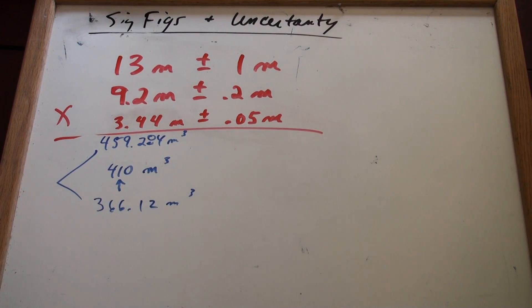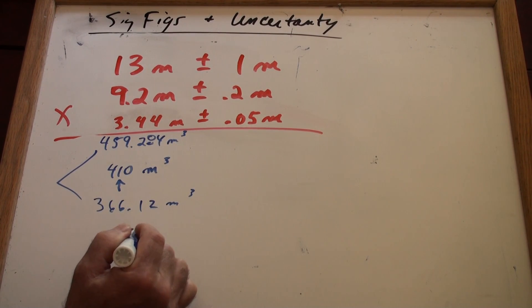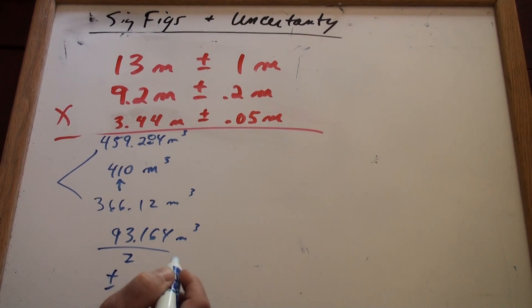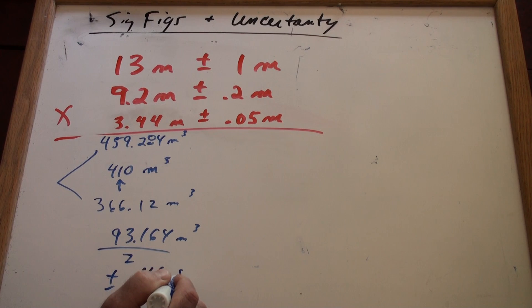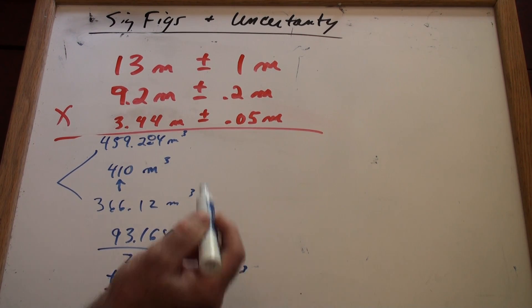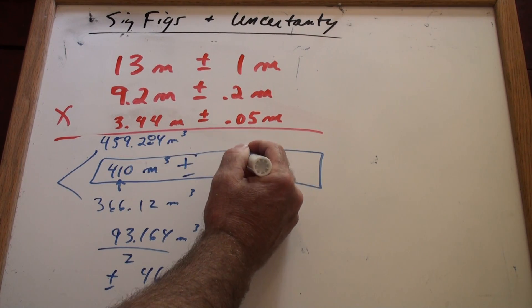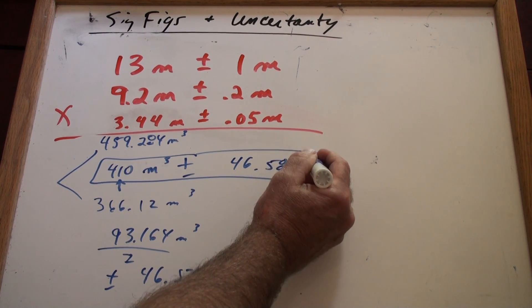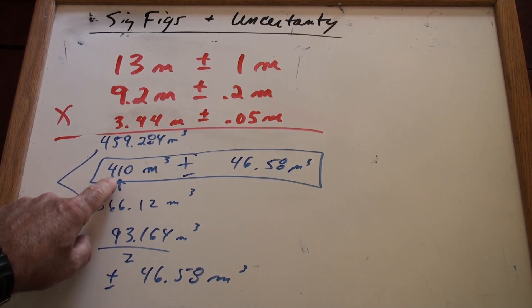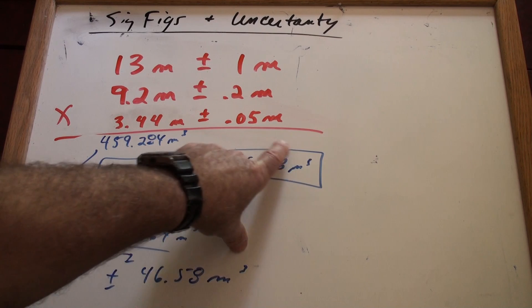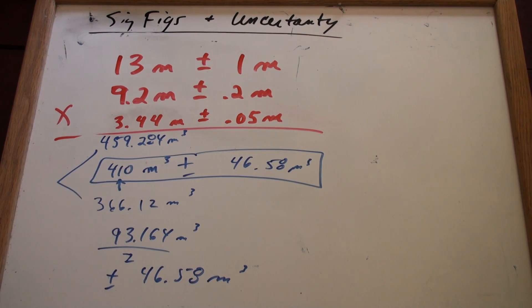Multiply those three numbers together and you get something like 366.12 cubic meters. Now, do you see how that's the highest and that's the lowest? What if you subtracted those two from each other? You'd get something like 93.164 cubic meters is the range of high to low. Divide that by two and you end up getting the plus or minus, which comes out to about 46.58. Now, do you report that here as 410 plus or minus 46.58? No,